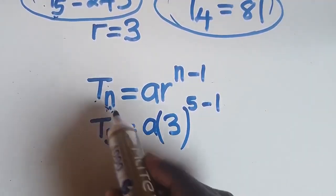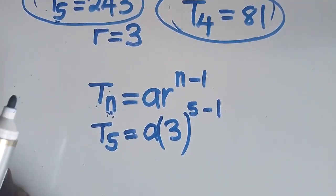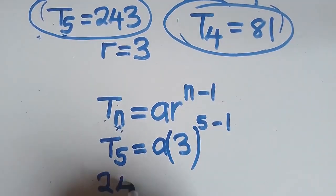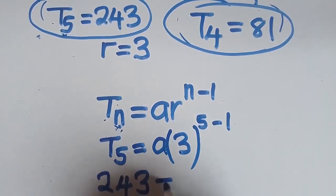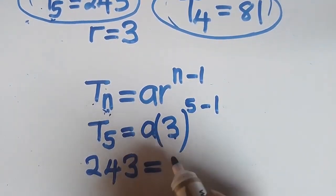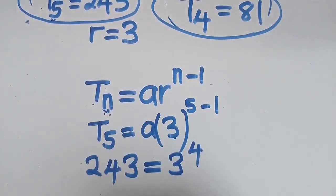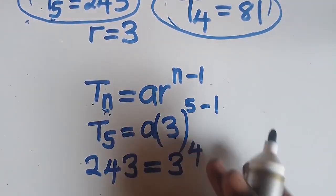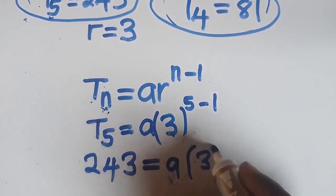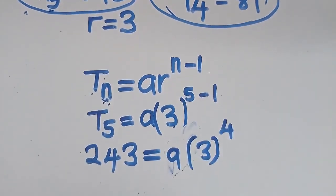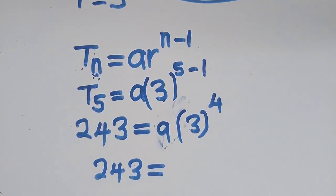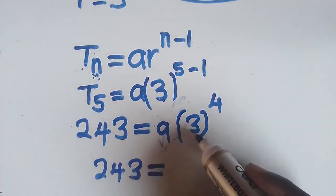What is your T5? It is 243, which is equal to A times 3 to the power of 4. There is A there, so you have 243 = A × 3^4. Press on your calculator — 3 to the power 4 is 81. So 81 times A gives 81A.